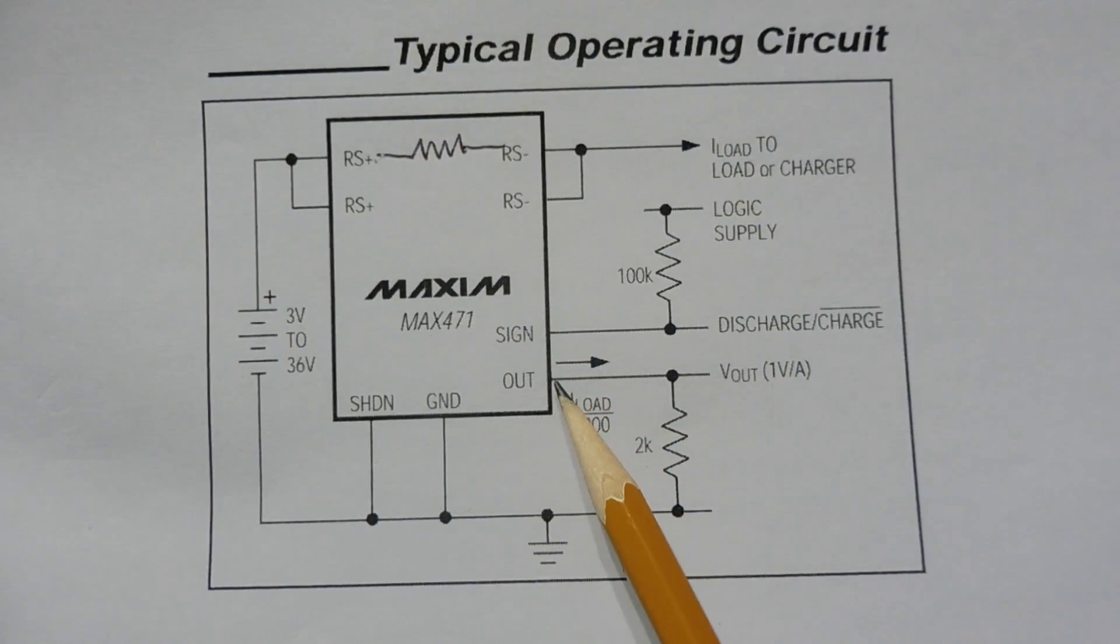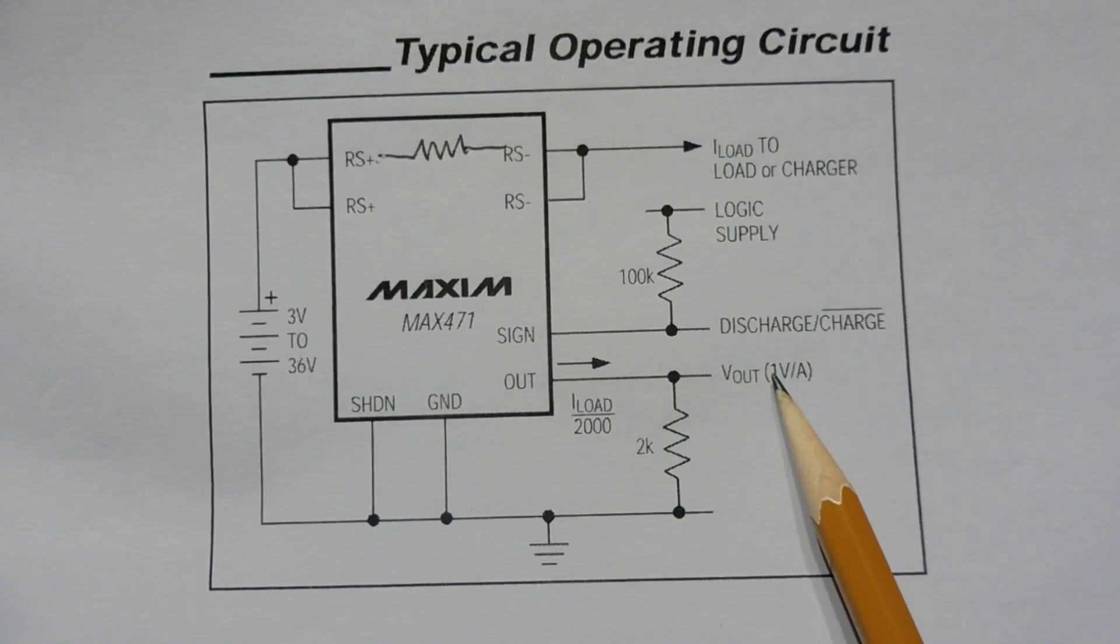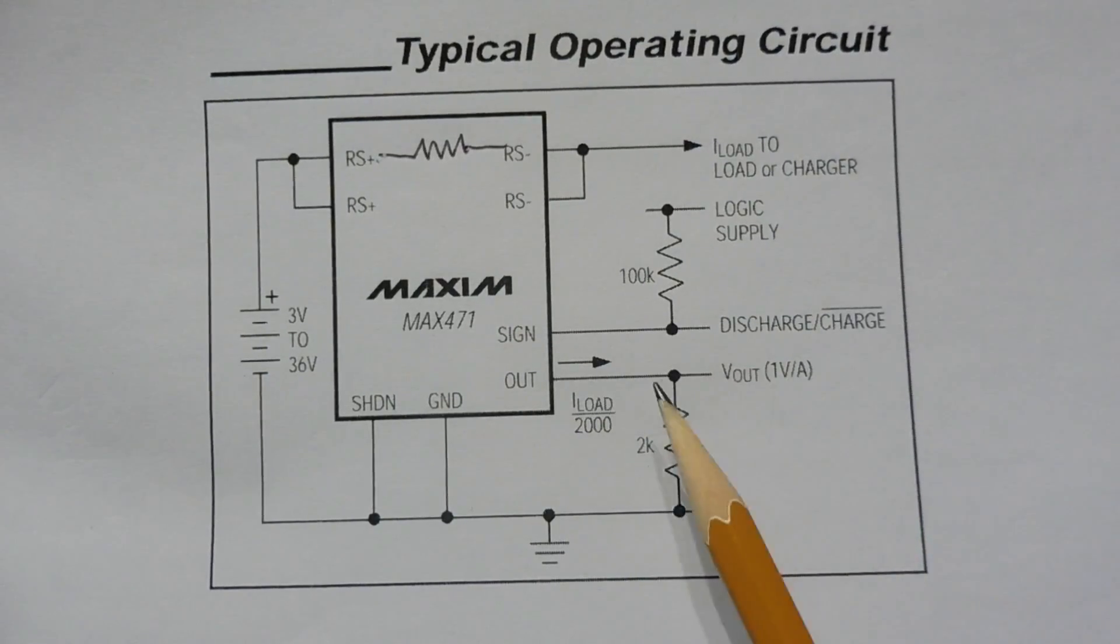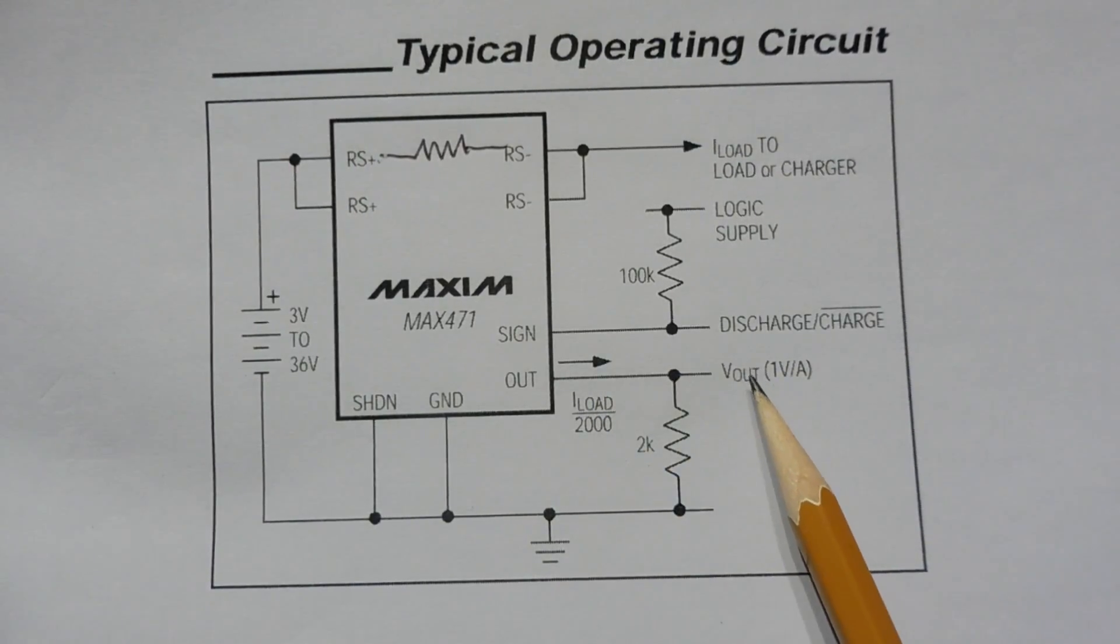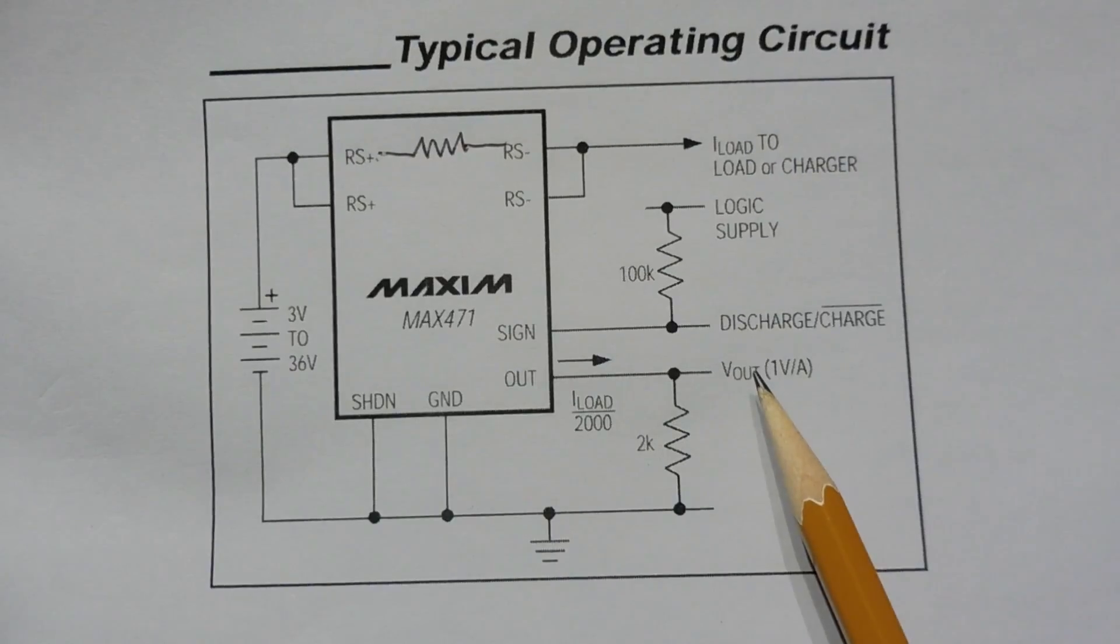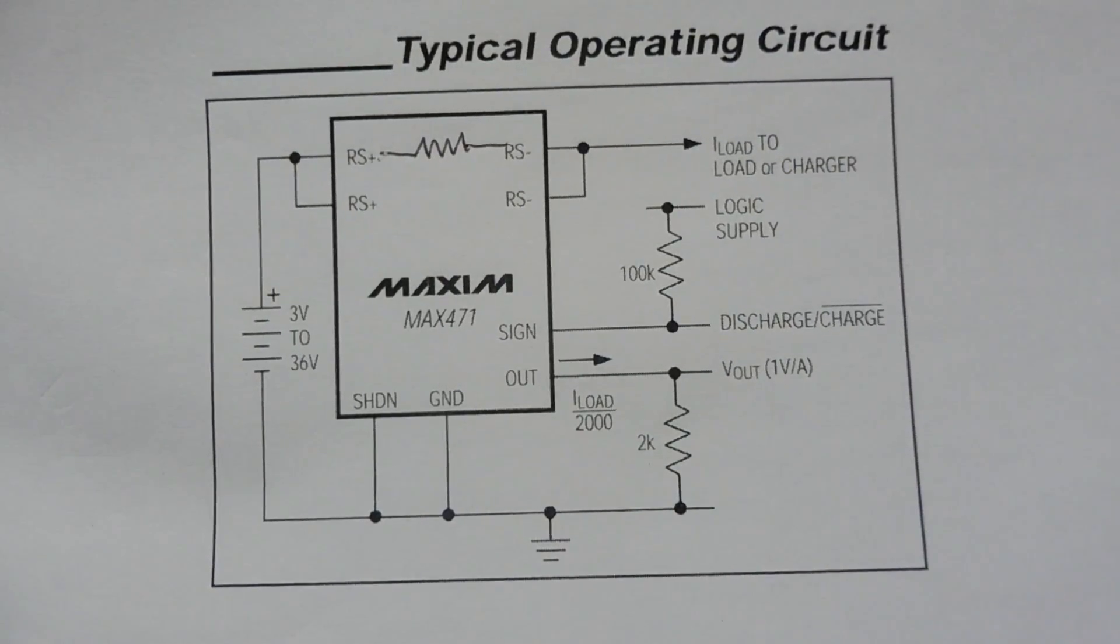Here's our output pin, and that will put a voltage of 1 volt per amp. So we'll get an output of 0 to 3 volts, which will equal 0 to 3 amps. It's pretty simple - we feed that into our analog to digital converter on our Arduino Nano, and we can actually calculate the current through our load.